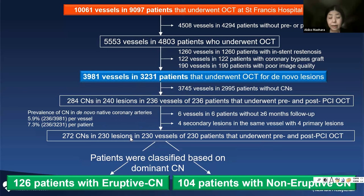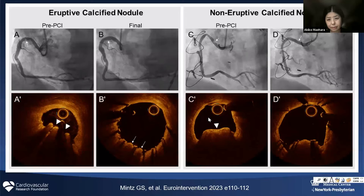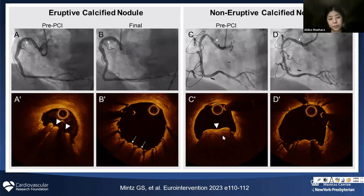Half of them were so-called eruptive calcified nodules and half were not. By angiography, both eruptive and non-eruptive appear as a radiolucent mass — quite similar. But by OCT, you can see the irregular surface of the eruptive calcified nodule. On the other hand, the non-eruptive one has a surface covered by a fibrous cap. Pathologists call this a healed calcified nodule. The appearance is quite different.